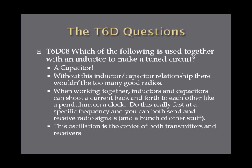Which of the following is used together with an inductor to make a tuned circuit? The answer is a capacitor, and this is a really big deal. This inductor-capacitor relationship is pretty much the centerpiece of all radios, receivers, and transmitters. When they work together, an inductor and capacitor can shoot current back and forth at each other like a pendulum on a clock, enabling timer circuits, receivers, transmitters — everything requiring oscillation. This oscillation is the centerpiece of receiving and transmitting radio signals.